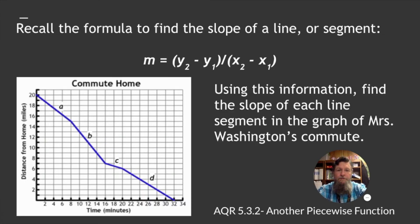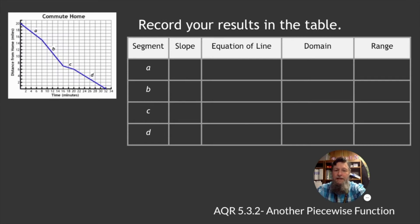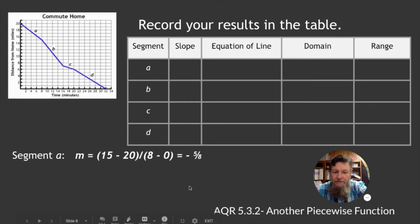All right, recall the formula to find slope of a line or a segment. We use this information to find the slope of each line segment in the graph of Mrs. Washington's commute. So, let's take a look. Segment A, the slope. Let's see. We went from 20 to 15. So, 15 minus 20. And then we went from 0 to 8. Went from 0, 20 to 8, 15. So, we're negative 5 eighths. And we'll put that in the slope there.